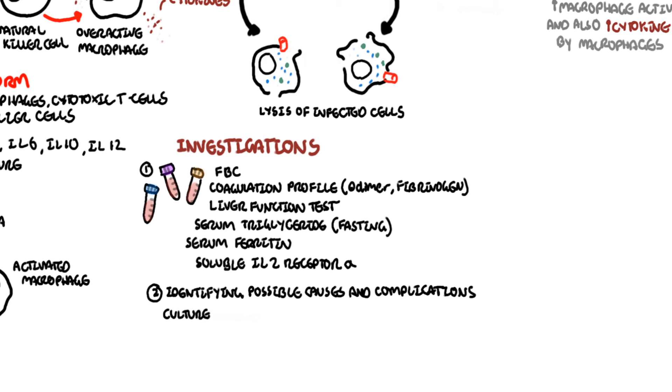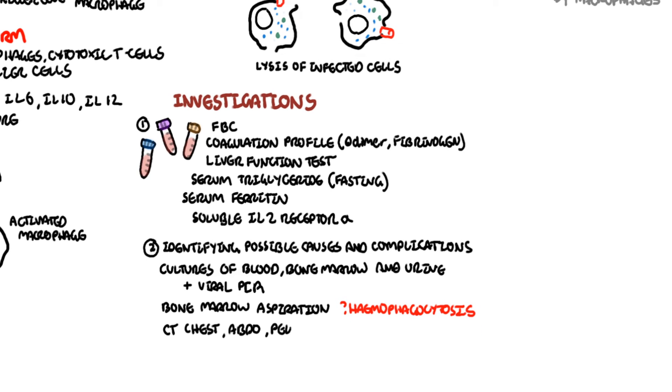As infection can be the cause, you culture everything: the blood, bone marrow, the urine, as well as order viral PCR. A bone marrow aspirate can reveal features of hemophagocytosis. CT chest, abdominal pelvis can look for malignancies, as well as potential infection, which again is a cause of this condition. Lumbar puncture, as well as MRI, can also find potential cause and complications.